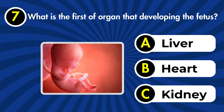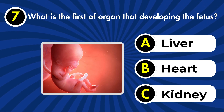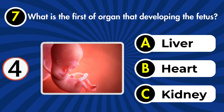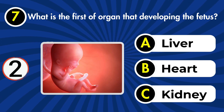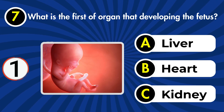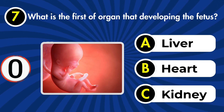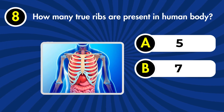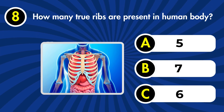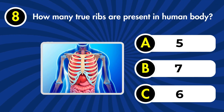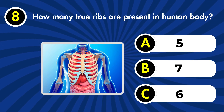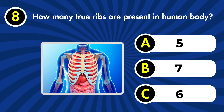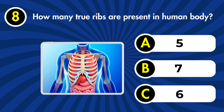Next question: what is the first organ to develop in a fetus? a) Liver, b) heart, c) kidney. Correct answer: b) heart.